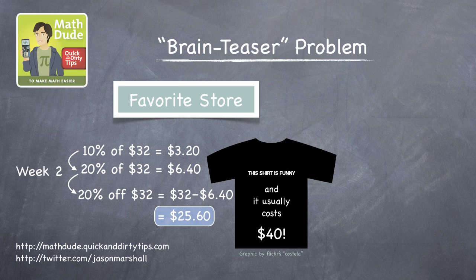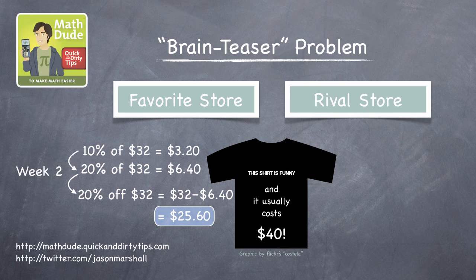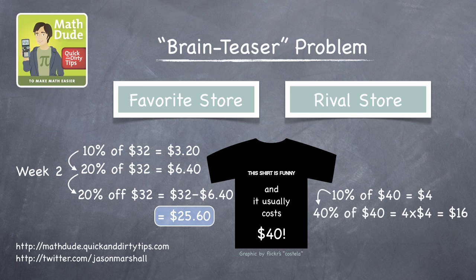How about your favorite store's rival? What's their on-sale price? They offer a 40% discount off the original price of $40. 10% of $40 is $4, and 40% is four times this, or $16. So the final sale price at the rival store is $40 minus $16, or $24.